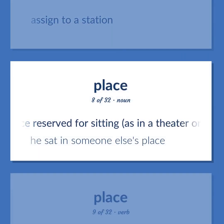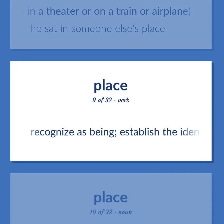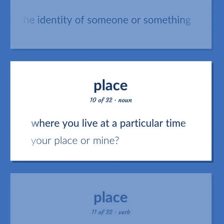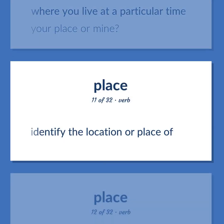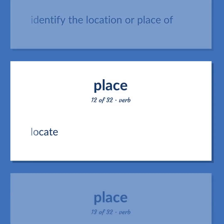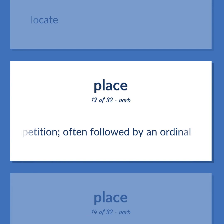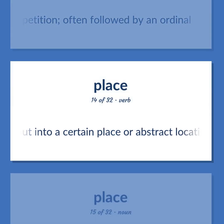Place: A space reserved for sitting, as in a theater or on a train or airplane — 'He sat in someone else's place.' Recognize as being; establish the identity of someone or something. Where you live at a particular time — 'Your place or mine?' Identify the location or place of; locate. Take a place in a competition, often followed by an ordinal. Put into a certain place or abstract location.